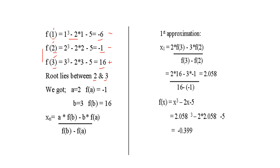So we set a = 2 and b = 3. Then f(a) = f(2) = -1, and f(b) = f(3) = 16. These values will be substituted into the Regula Falsi formula.